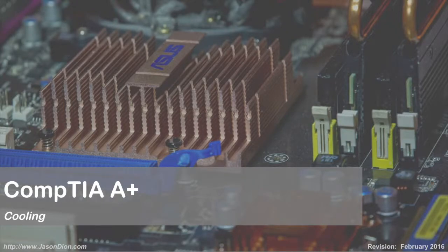Cooling. As we use our computers, they generate a lot of heat. Heat is generated inside the power supply as it converts from AC to DC. Our processor generates a lot of heat doing mathematical computations, as well as our graphics cards. Those are our three main heat sources inside the computer.